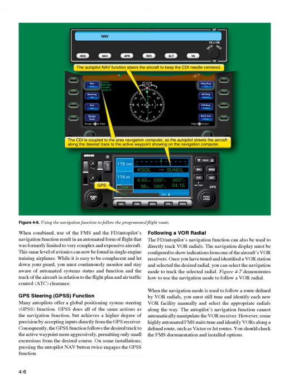Using the Navigation Function to Follow the Programmed Flight Route. When combined, use of the FMS and the FD/autopilot's navigation function results in an automated form of flight that was formerly limited to very complex and expensive aircraft. This same level of avionics can now be found in single-engine training airplanes. You must continuously monitor and stay aware of automated system status and function, and the track of the aircraft in relation to the flight plan and ATC clearance.